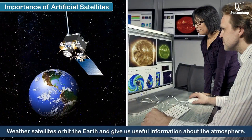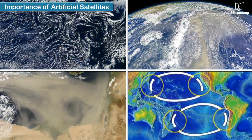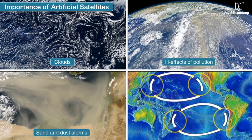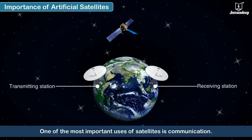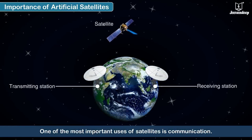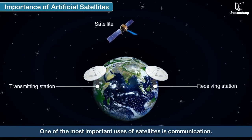Weather satellites orbit the Earth and give us useful information about the atmosphere. They capture images of the clouds, ill effects of pollution, sand and dust storms, boundaries of ocean currents, etc., which help greatly in weather forecasts. One of the most important uses of satellites is communication.